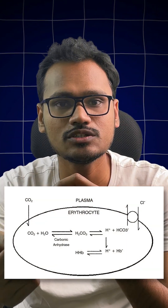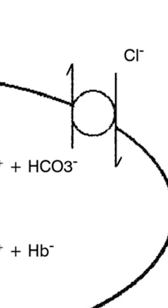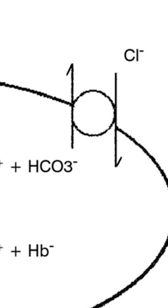Whenever the bicarbonate leaves the RBC and enters into the plasma, there is an exchange of chloride ion for this shift of bicarbonate. When the chloride enters the RBC, it doesn't come alone — it also drags some water along with it.